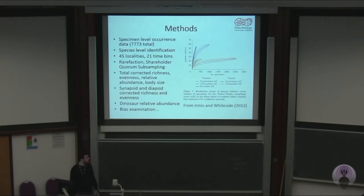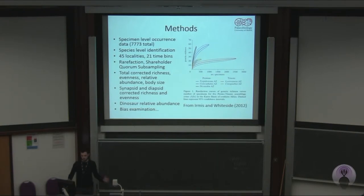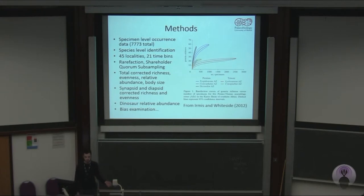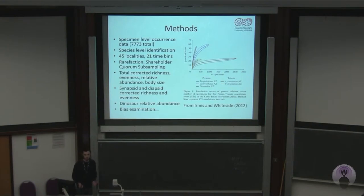To do this, we compiled an updated specimen-level dataset of tetrapod occurrences from globally, identified at species level but usually analysed at a generic level. This covered forty-four different localities added into 21 different time bins. One problem with palaeontological data is that you have very different specimen counts across formations, making it quite difficult to compare richness directly.